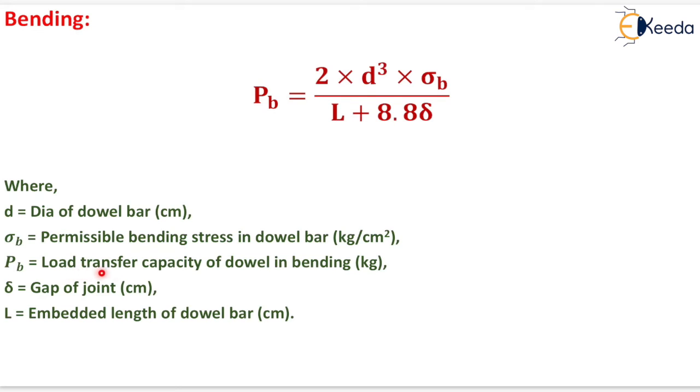P_b is the load transfer capacity of the dowel in bending in kg, δ is the gap of the joint in centimeters, and L is the embedded length of the dowel bar in centimeters.